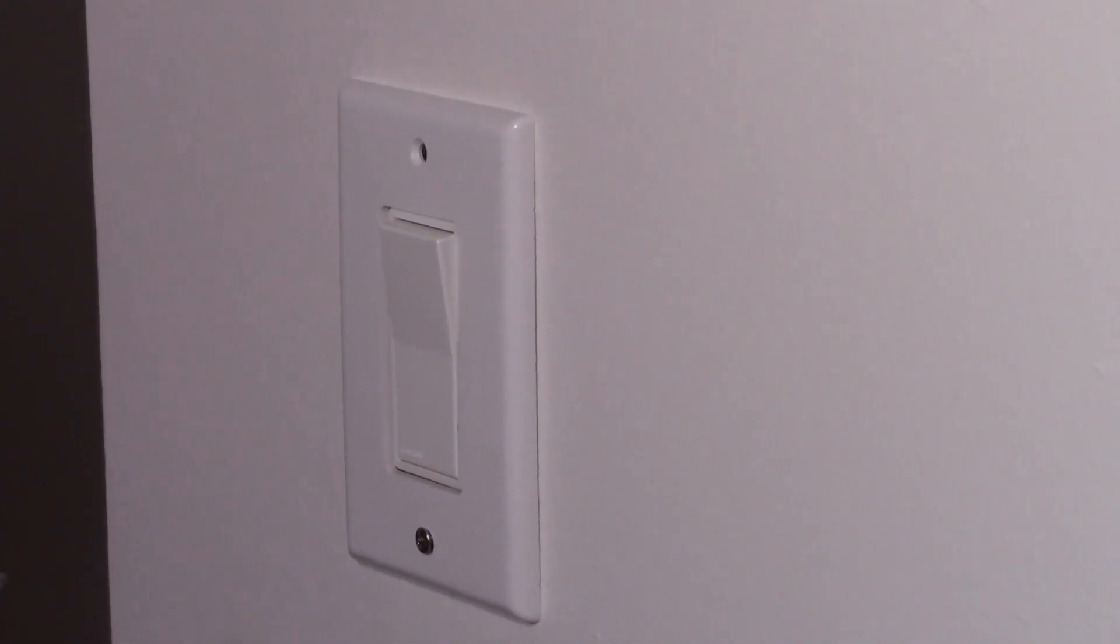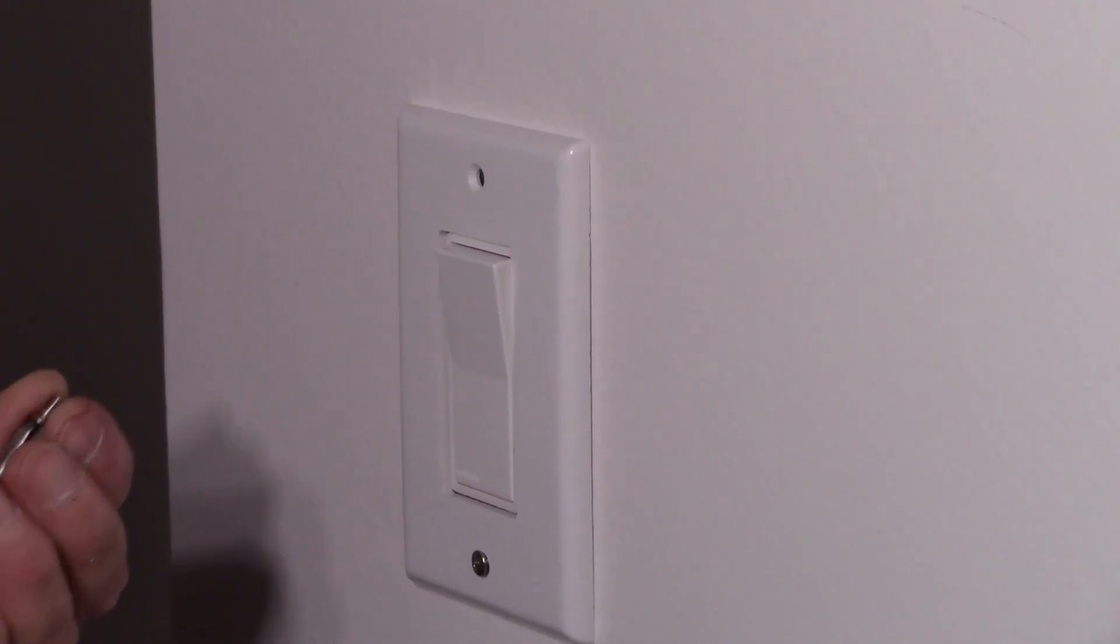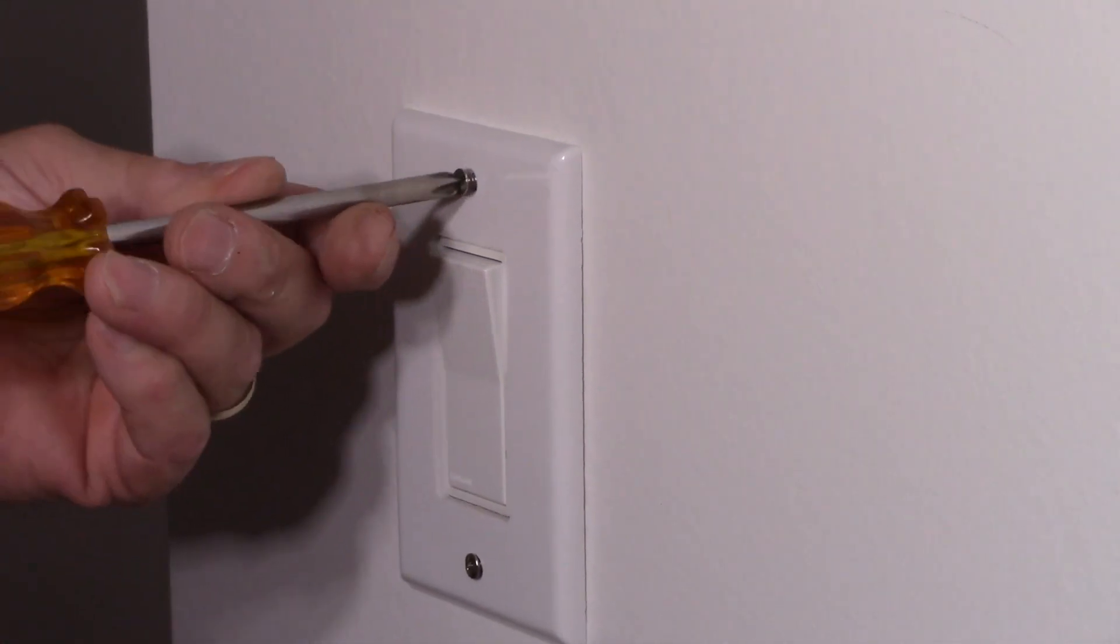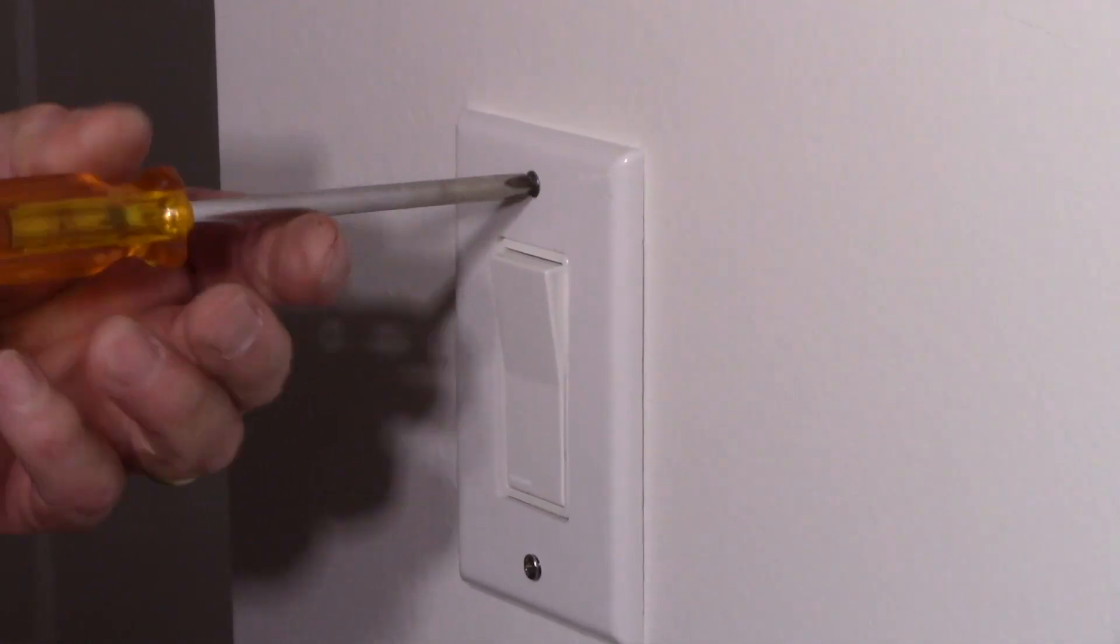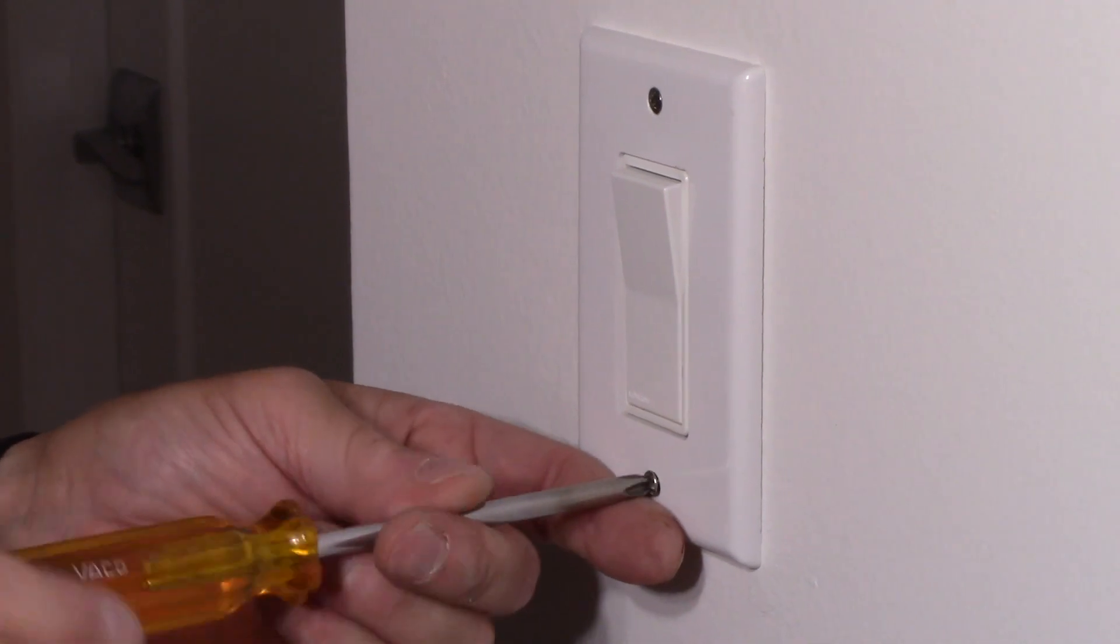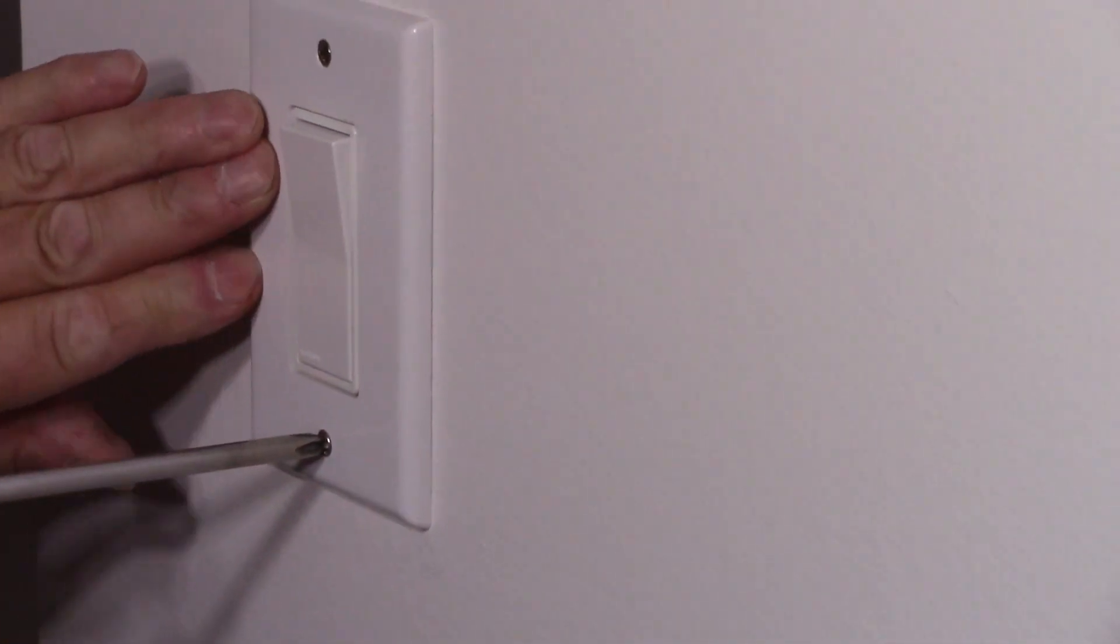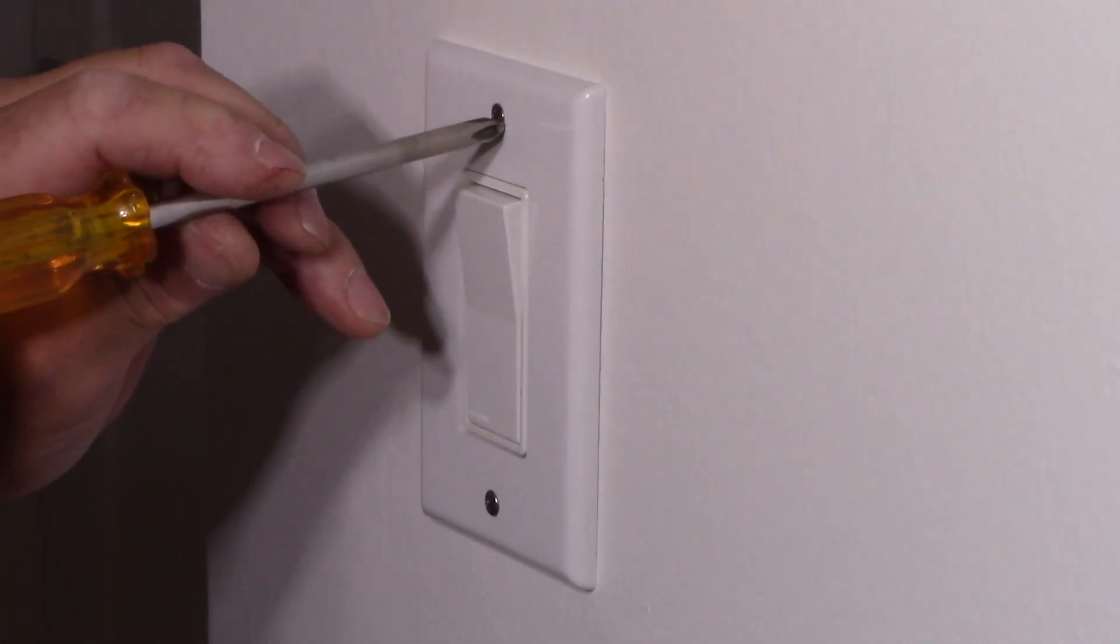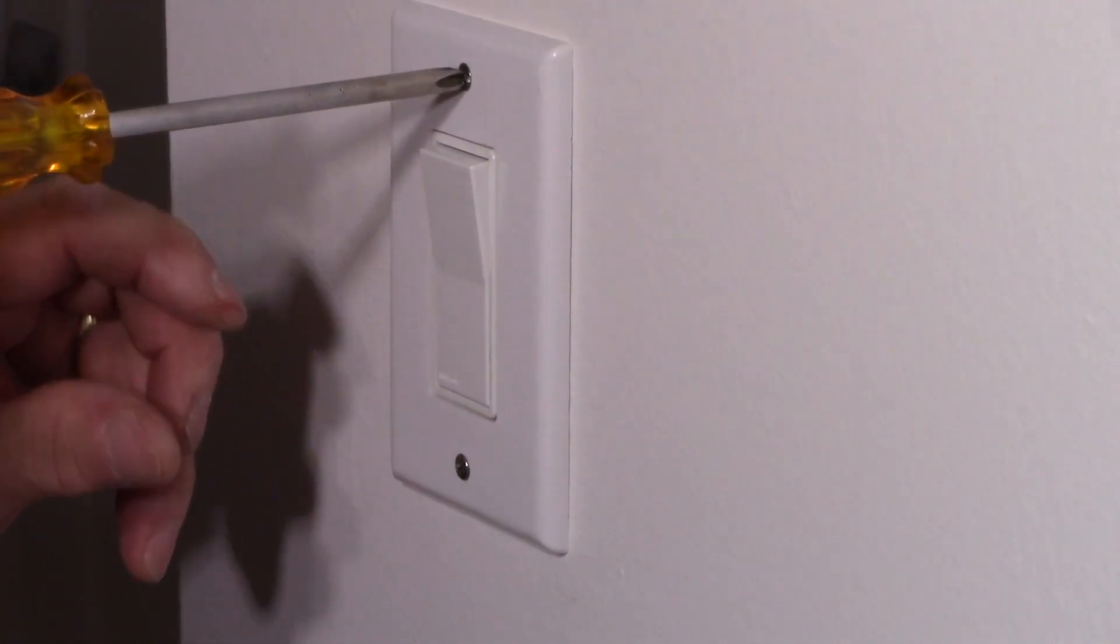Before you tighten one screw make sure you have both of them caught. It's a lot easier instead of tightening one and trying to fish around to get the other one in. Screw it in like that. We'll screw this one in like that.